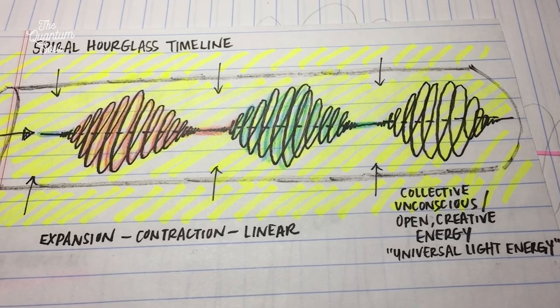Abraham also explained that the spiral hourglass timeline is the natural ebb and flow of the universe, constantly in expansion and contraction, like the breath — an inhale and an exhale. The collective spiral hourglass timeline moves with the energy of the universe, not against it.